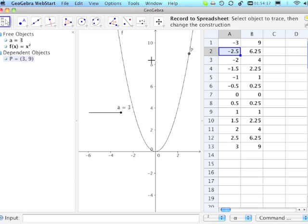I'm now going to click on the move drawing pad tool and then click somewhere in there. This turns off the trace of the values.